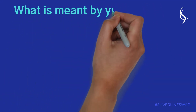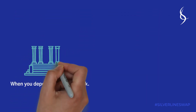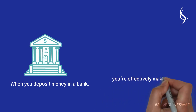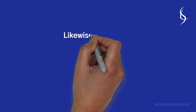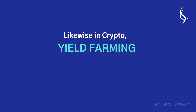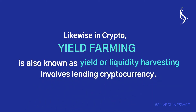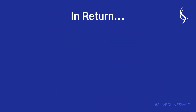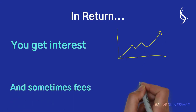What is meant by yield farming? When you deposit money in a bank, you're effectively making a loan for which you get interest in return. Likewise, in crypto, yield farming — also known as yield or liquidity harvesting — involves lending cryptocurrency. In return, you get interest and sometimes fees.